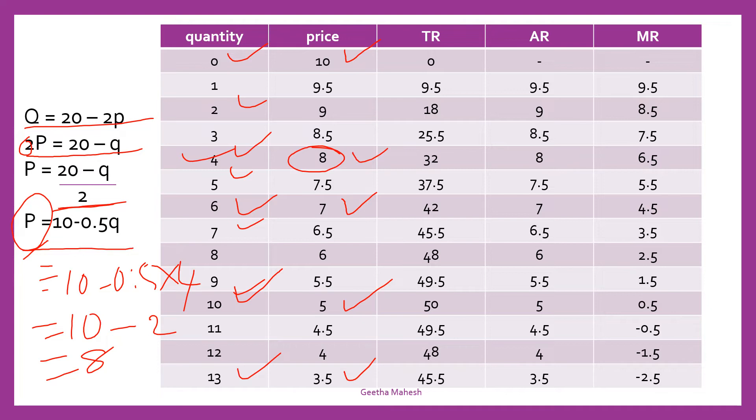So, there is an inverse relationship between the price and quantity demand. A monopolist can sell more quantity at a lower price. This already we have discussed. Monopoly and demand curve. Because monopolist will have downward sloping demand curve.